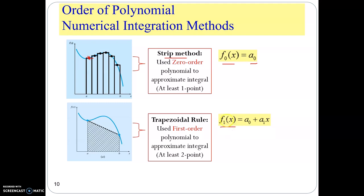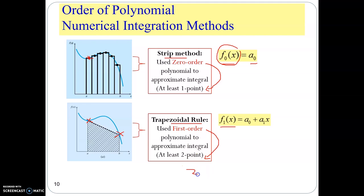For the first order integration method, you have A0 plus A1·x, which is similar to a linear equation. You need two points to find the linear line representing the height function. This is called the trapezoidal rule because the shape is similar to a trapezoidal shape. For zero order, you need one point. For first order, you need two points. You can estimate that for second order you need three points, and third order needs four points. So the number of points equals n plus 1, where n is the order.